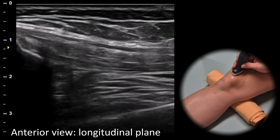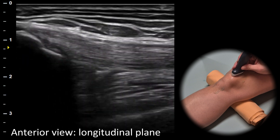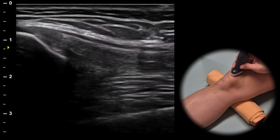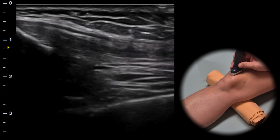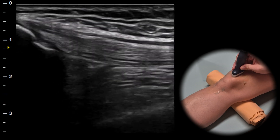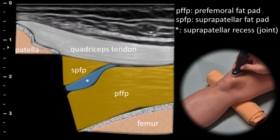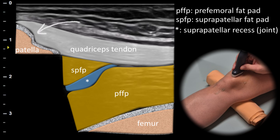In the longitudinal view we can assess the suprapatellar recess, which is the proximal part of the knee joint. Here we can scan for joint fluid. The suprapatellar recess is located between the prefemoral and suprapatellar fat pads. In this plane we can also evaluate the quadriceps tendon in its long axis and its attachment to the patella.